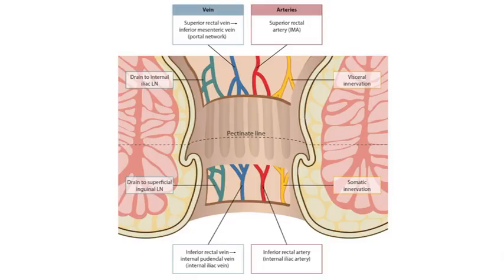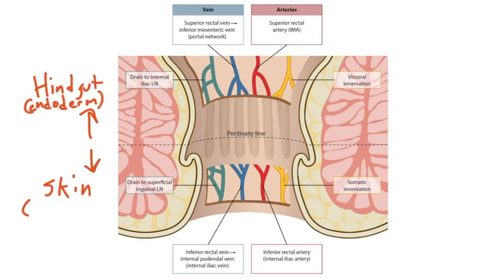Looking at this image, we see the pectinate line. Above is the hindgut, which is endoderm, and below is the skin, which is derived from the ectoderm. I emphasize endoderm versus ectoderm to help you realize that both spaces have a different embryologic origin. If their embryologic origin is different, it makes sense that the nerves, arteries, veins, and lymphatics would also differ between these two areas.